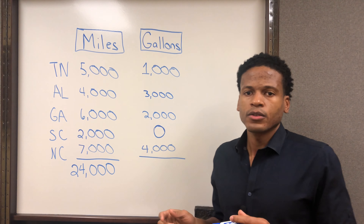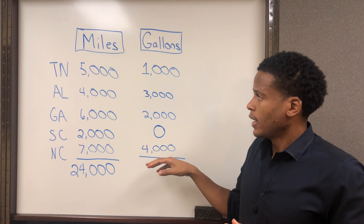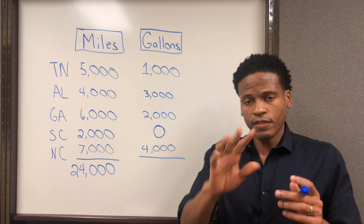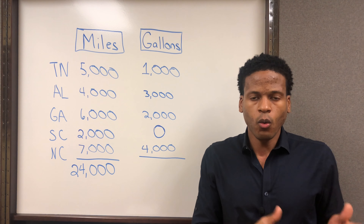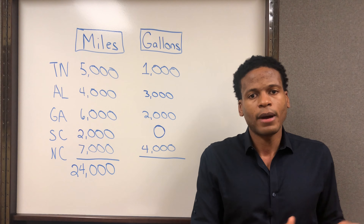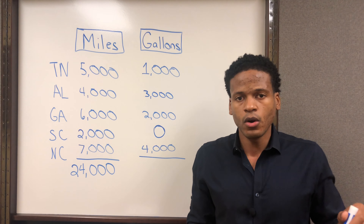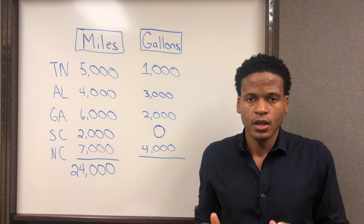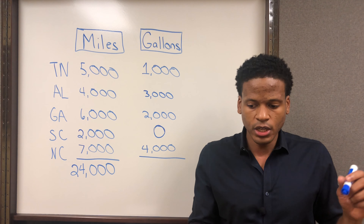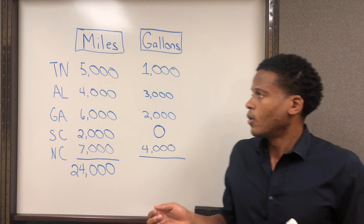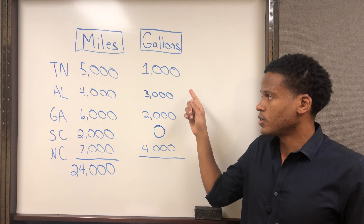After the miles, you need to know the gallons of fuel purchased for the quarter in each state. If you don't have a fuel card, what you'll do is gather up all your receipts for the quarter, separate them by state, and add up the fuel purchased on each receipt so you know how much fuel you purchased per state. You need to know the total gallons purchased in each state, and you'll use the receipts to get that.